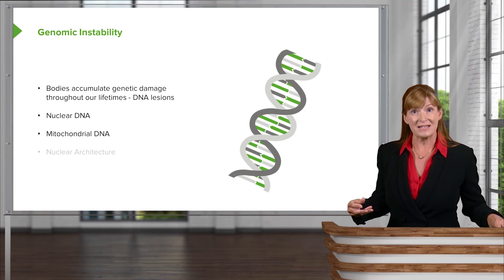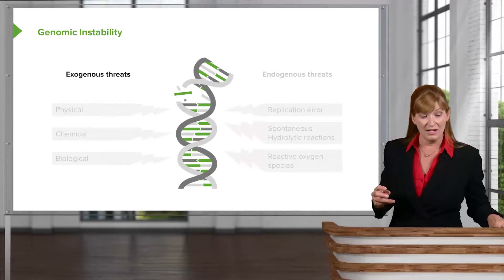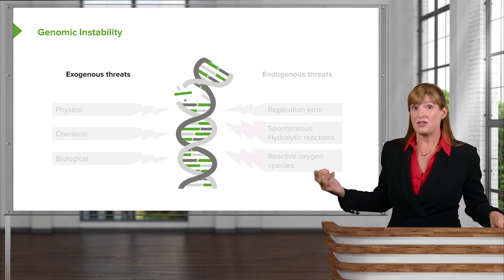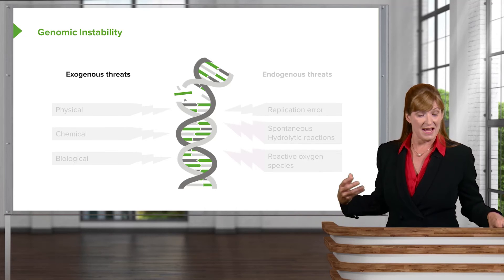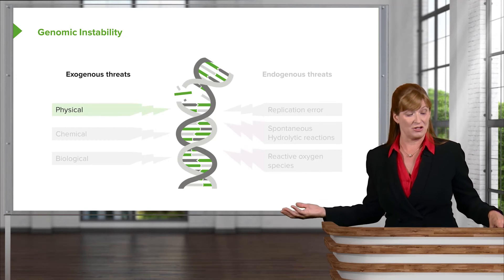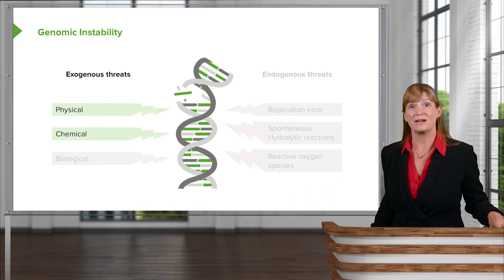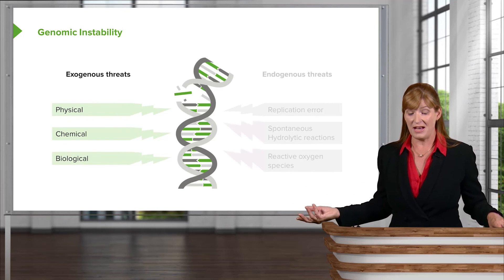We also need to consider the nuclear architecture — all of the components that go into the nucleus and keeping that system of DNA transcription working efficiently. When we consider genomic instability, we have both exogenous threats — things that impact it from the outside — as well as endogenous threats. Outside influences can be physical or chemical influences from things we are exposed to during life, as well as biological influences from within ourselves and outside of ourselves.